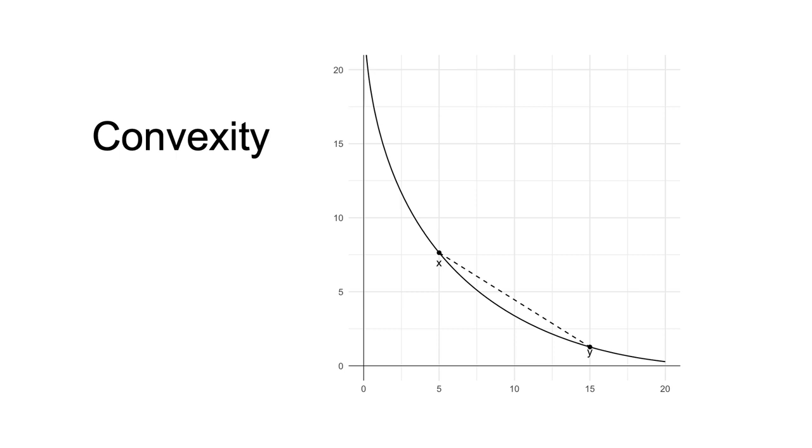The curve represents an indifference curve for different combinations of two goods. There are two bundles, x and y. In this case, x is weakly preferred to y, as x is at least as good as y.